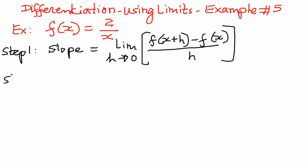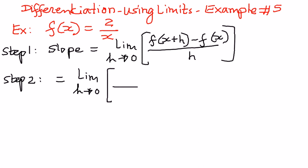As a second step, we can now substitute the given function into this particular problem. So the way we can write it out is as follows: limit as h approaches 0, the numerator part we can write as 2 divided by x plus h, minus 2 over x, the whole thing divided by h.